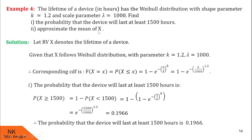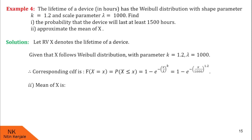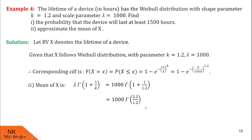Next we calculate the mean of x. E(x) = lambda times gamma(1 + 1/k), where lambda is 1000 and k is 1.2. After substituting, the mean is 1000 times gamma(2.2/1.2), which evaluates to approximately 940.66. Therefore the approximate mean of x is 940.66 hours. I hope you understood this solution. Now it is your turn to solve some examples.